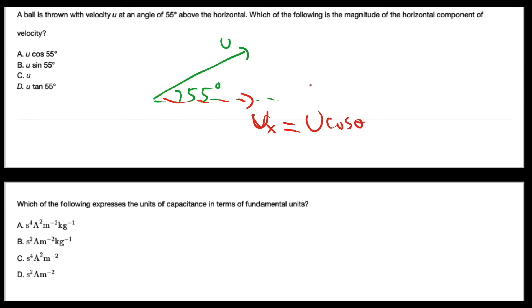So we know this by using trigonometry. It's going to be equal to u cos θ, which is equal to u cos 55°. If you want to calculate the vertical component, it's going to be equal to u sin 55°. So the answer for this one is going to be A.